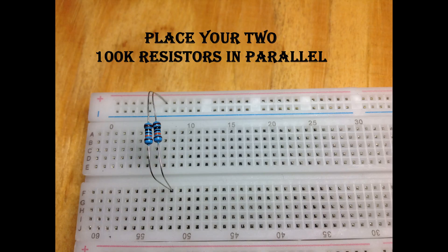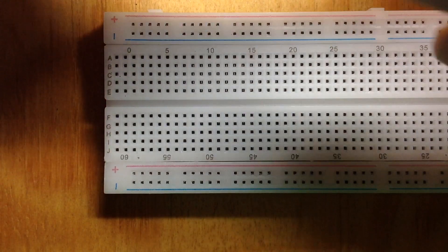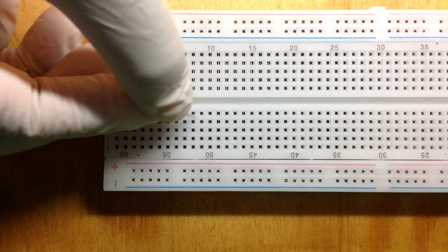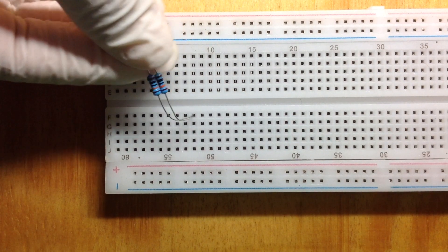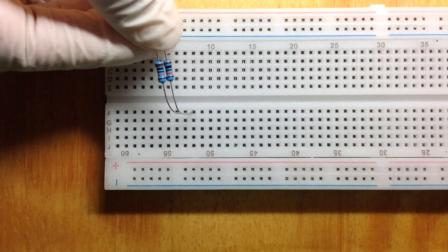Start by placing two 100k resistors in parallel. One side is going to be connected to the positive terminal of the breadboard, and the other is going to be connected over the middle of the breadboard into row F.